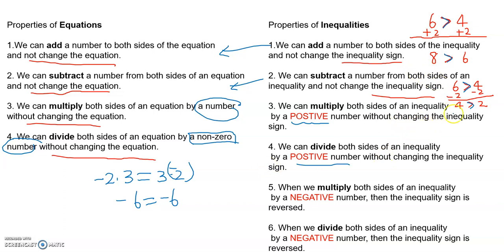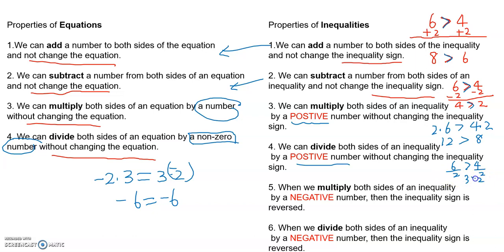So with six is greater than four — if we double both sides, you end up with 12 and I end up with 8; the inequality sign doesn't change. Similarly for division — if we cut our money in half, you get 3 and I get 2, and 3 is still greater than 2. As you can see, if we multiply or divide both sides by a positive number, it's not going to change the inequality sign.